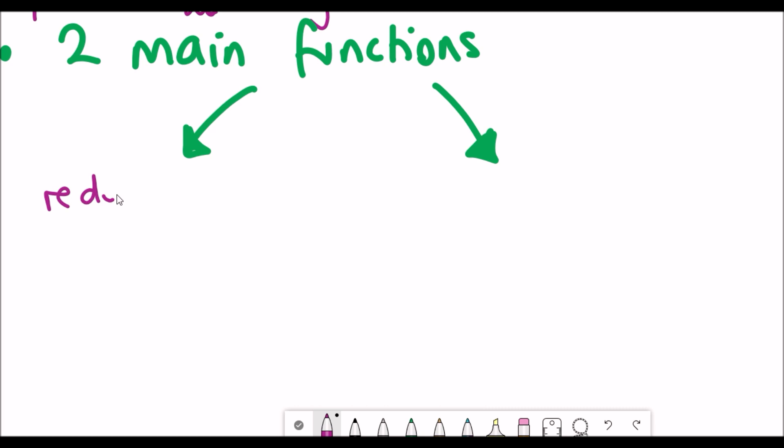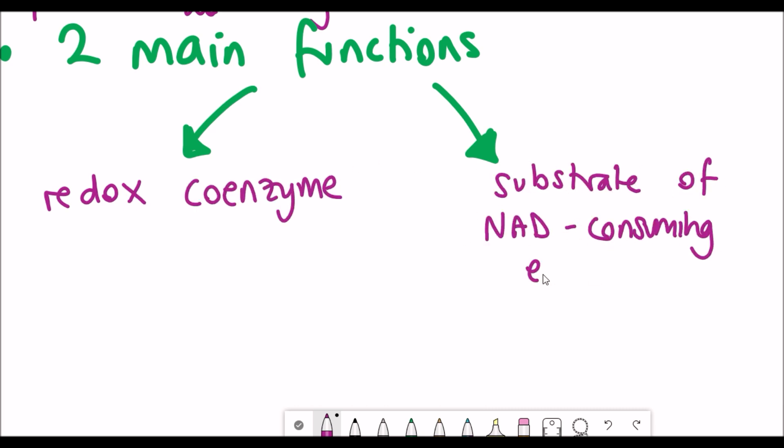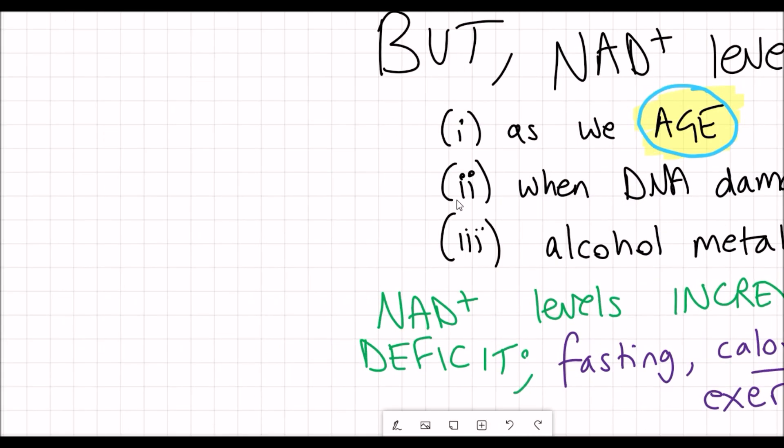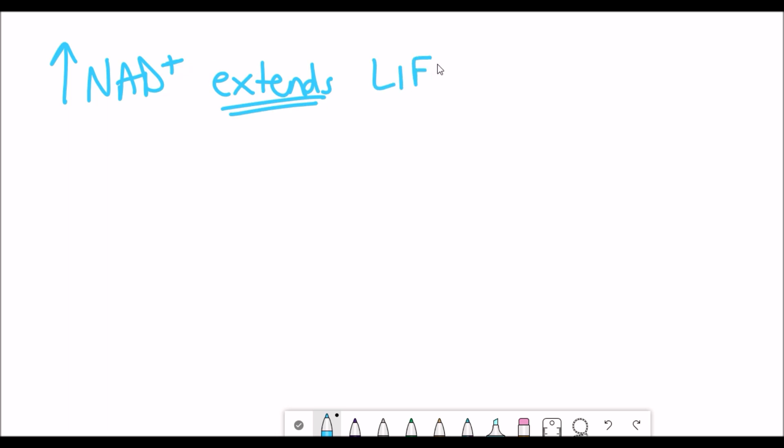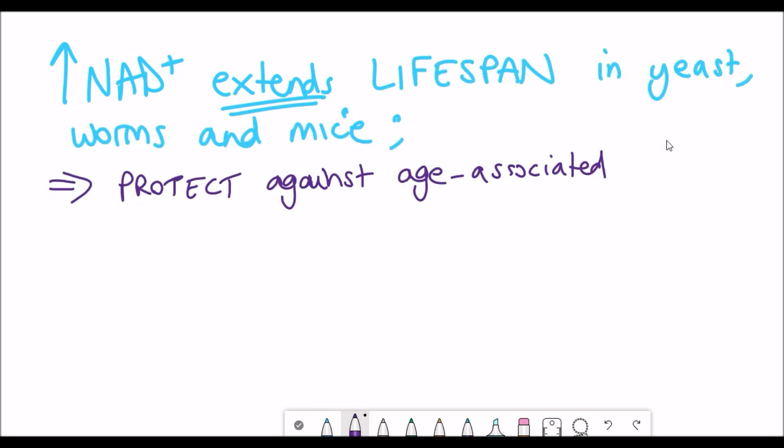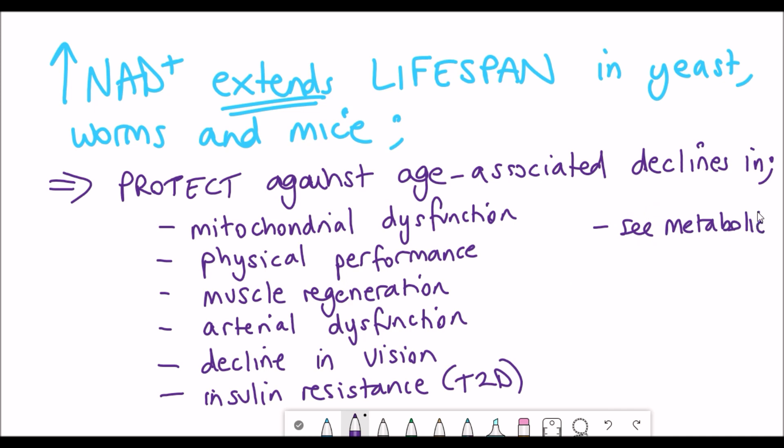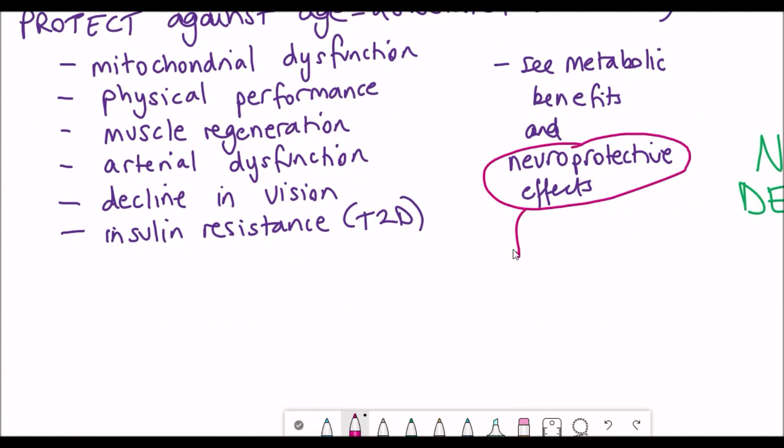This includes its role as a redox co-enzyme and secondly as a substrate for NAD dependent enzymes. But the problem is NAD plus levels decline as we age. Interestingly, studies have shown that by increasing these NAD plus levels actually extends the lifespan in yeast, worms, and mice, and protects against this age-associated decline which is also associated with mitochondrial dysfunction, physical performance, loss of muscle regeneration, and other things you can see listed there.